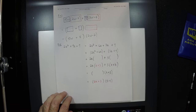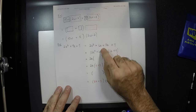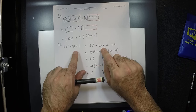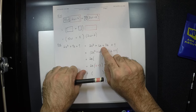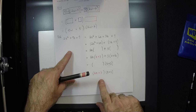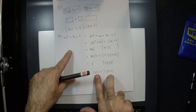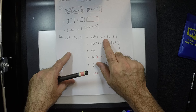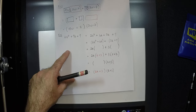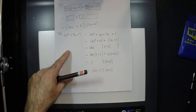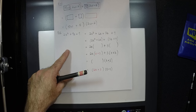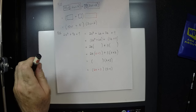A student asks: if I switch 3z and 6z, does it matter? If you split 9z as 3z plus 6z instead, you might get the factors in the other order, but multiplication commutes so the answer is the same. As long as you don't make algebraic mistakes, you will always get the same answer.